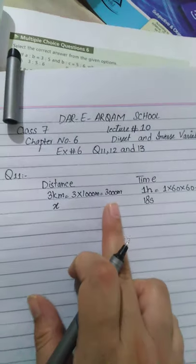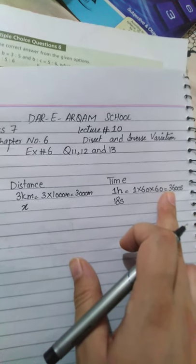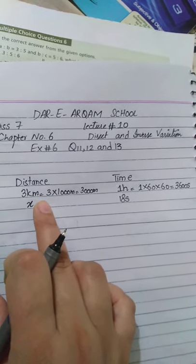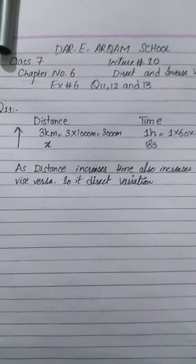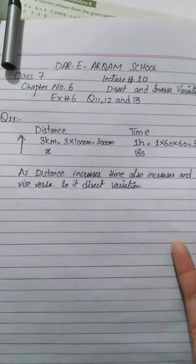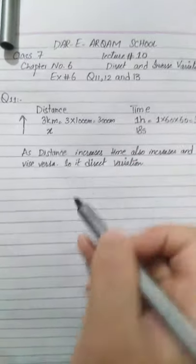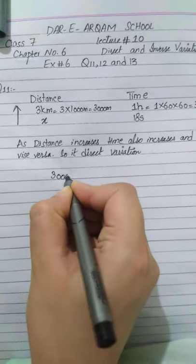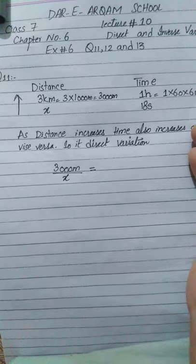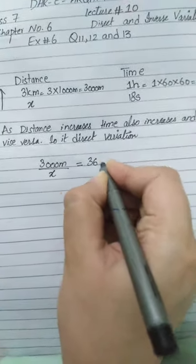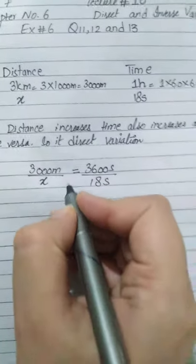It means he covered 3000 meters in 3600 seconds. As the time decreases, the distance also decreases — this is a direct relationship, a direct variation. As distance increases, more time is needed; as time decreases, less distance is covered. In direct variation, write the first distance (3000 meters) divided by the second distance (X), equal to the first time (3600 seconds) divided by the second time (18 seconds).